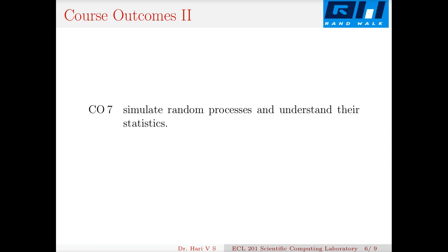CO7 is that the student will be able to simulate random processes and understand their statistics. In all engineering applications — be it communications or anything else — you encounter random variables and processes, so you should be able to simulate and understand them. These are the seven course outcomes.